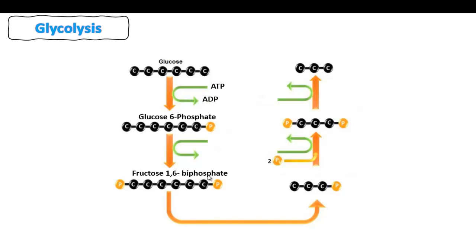Why are we calling it fructose and not glucose-1,6-bisphosphate? Keep in mind that glucose and fructose have the same chemical formula, C6H12O6, but the difference is that glucose is a six-membered ring while fructose is a five-membered ring. The phosphate for this step again comes from ATP, which is converted into ADP plus a phosphate that binds to the glucose-6-phosphate molecule.